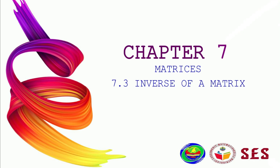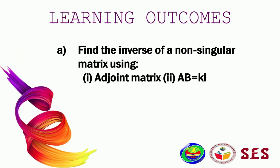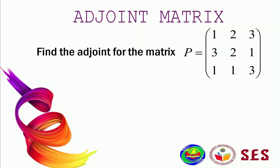Assalamualaikum warahmatullahi wabarakatuh and a very good day. Today we start Chapter 7 Matrices, subtopic 7.3: Inverse of a Matrix. At the end of the lesson you should be able to find the inverse of a non-singular matrix using two methods: adjoint matrix, and AB equals kI.